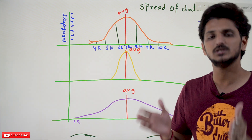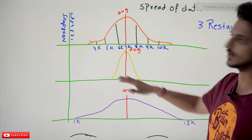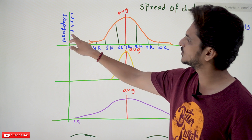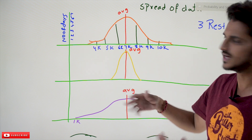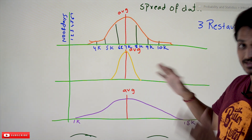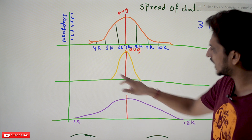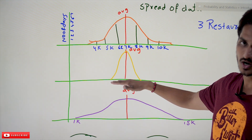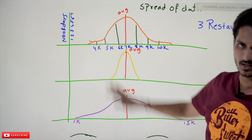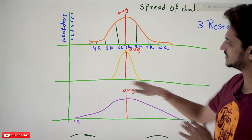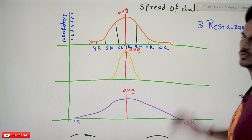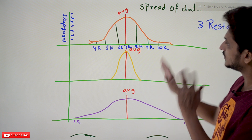On the y-axis we have number of days — so 4,000 was collected for one day, 5,000 for two days, 6,000 for four days, and so on. This is how the distribution looks for restaurant one. We did the same for restaurant two and restaurant three. This is how all three distributions look.